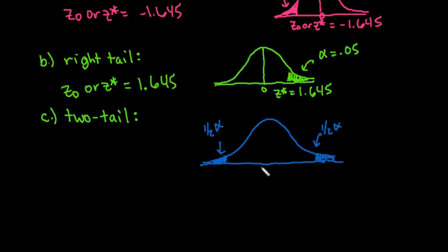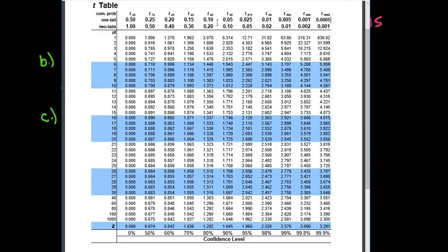So what we would do is we would go to our table, and this time, we would look for a two-tail test and find 0.05, and then we would go to the very bottom of this one, and we see that it's 1.96.